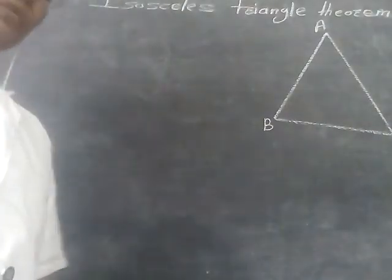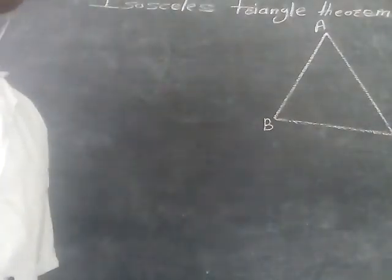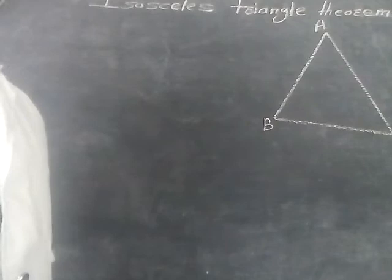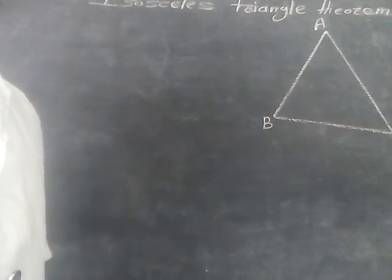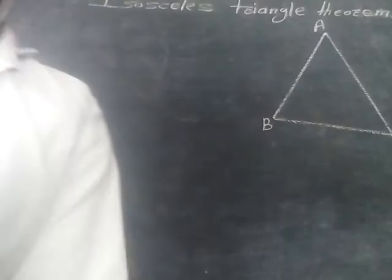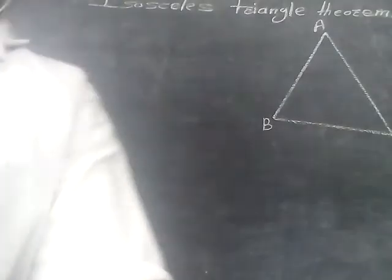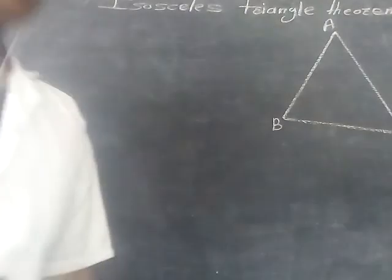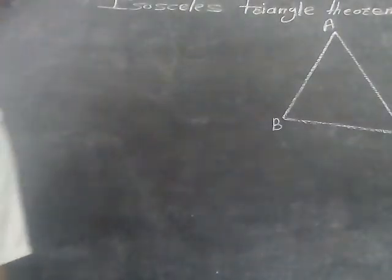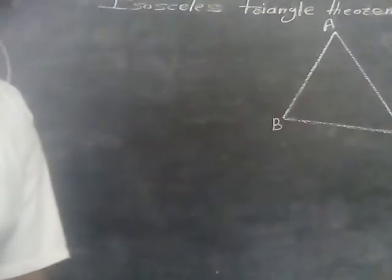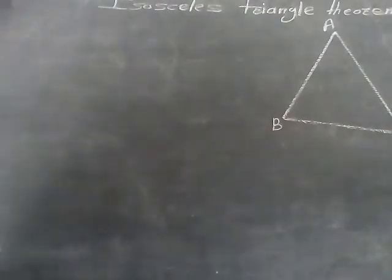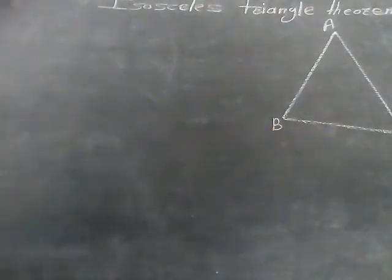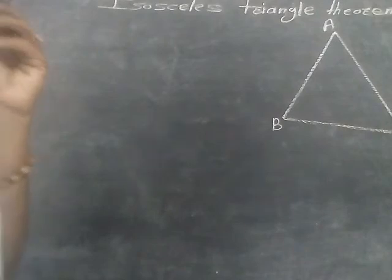Good morning students, today we discuss the theorem — that is the isosceles triangle theorem. So let's see the isosceles triangle theorem. What is the statement of isosceles triangle theorem? If two sides of a triangle are congruent, then the angles opposite to them are congruent.